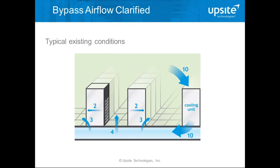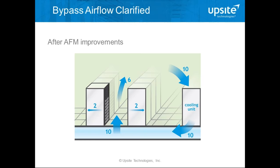These graphics show how bypass airflow relates to improving airflow management through the raised floor. In a typical scenario, 10 units of air move through all the cooling units. In this case, four units come out of supply tiles in the cold aisle and six units come out of unsealed cable openings behind cabinets. Many people see this and think sealing cable openings will improve bypass airflow.